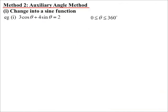Another way of doing it, which I kind of like, is to transform it into one trig function. It's called the auxiliary angle method. I'm going to change it, instead of having a sine plus cos, turn it into just one sine function. Same question: 3 cos theta plus 4 sine theta equals 2. You remember our compound angle for sine, which goes sine cos cos sine.